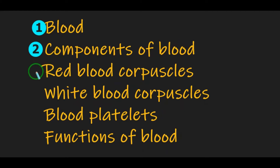Formed elements are again of three types. Third, we discussed about red blood corpuscles, or erythrocytes. Why is human blood red in color? Due to the presence of the respiratory pigment hemoglobin. So human blood is red in color. The lifespan of red blood corpuscles is 120 days, and the shape of the RBC is biconcave and disc-shaped. The function is transport of oxygen from lungs to tissues.